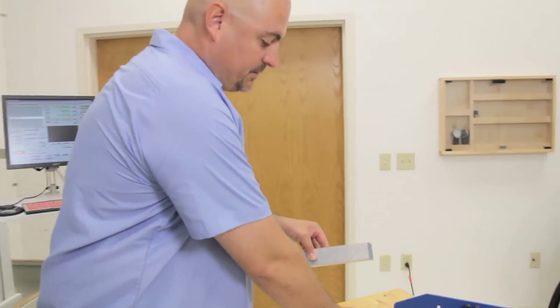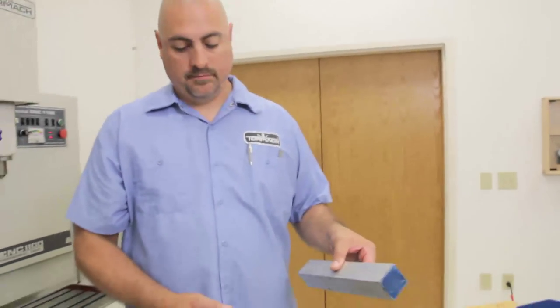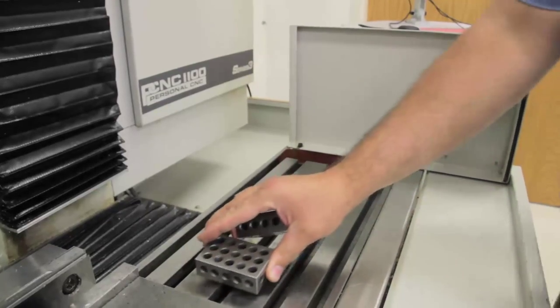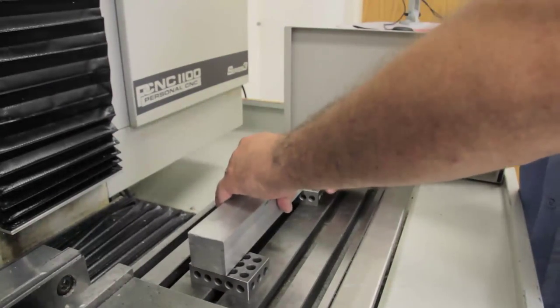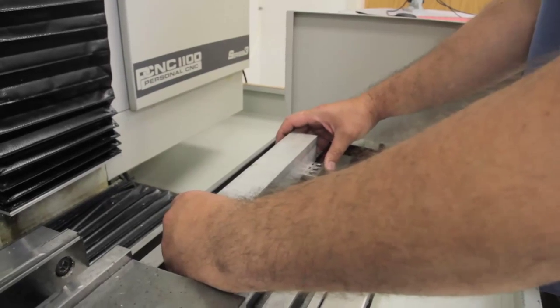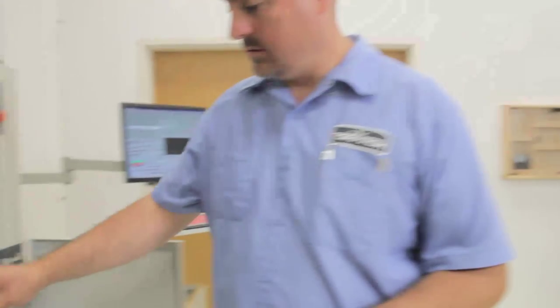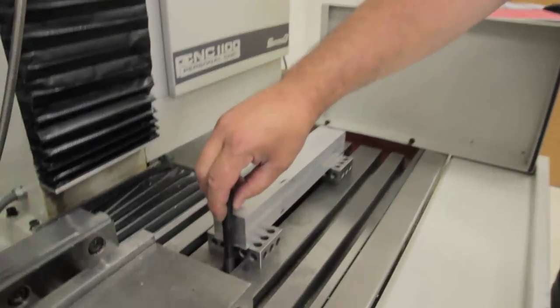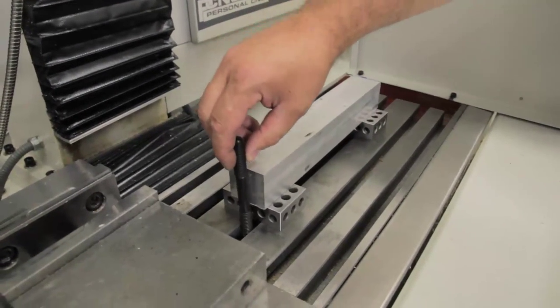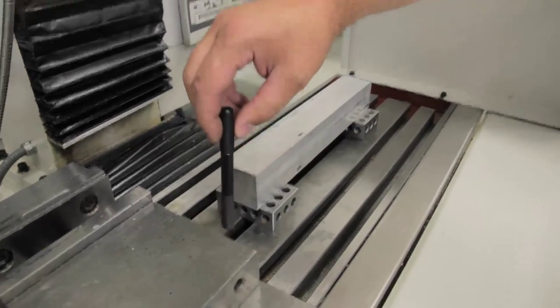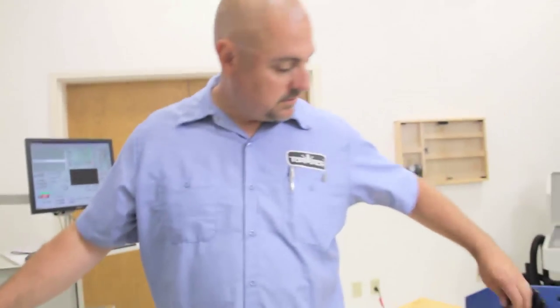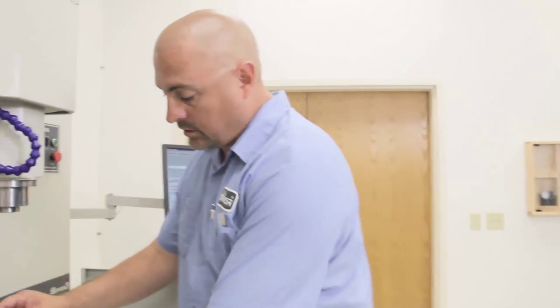We'll clamp this block down to the middle. You have to pick the appropriate length stud. Just hold it next to the work piece, down to the bottom of the T-slot. You have to figure in your clamp.